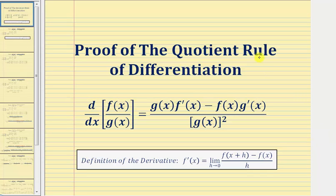Welcome to a proof of the Quotient Rule of Differentiation, which states that the derivative of f(x) divided by g(x) with respect to x is equal to the quantity g(x) times f′(x) minus f(x) times g′(x), all divided by g(x) squared. Or equivalently, the derivative equals the denominator times the derivative of the numerator, minus the numerator times the derivative of the denominator, all divided by the denominator squared.